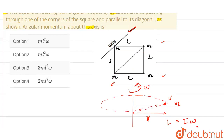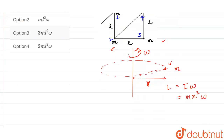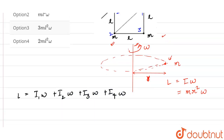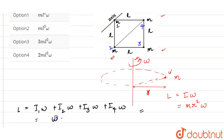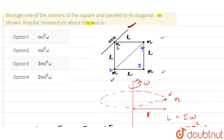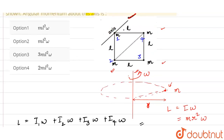Let's label the four masses: mass 1, 2, 3, and 4. The total angular momentum is I1·omega + I2·omega + I3·omega + I4·omega. Taking omega as common: omega times (I1 + I2 + I3 + I4). Now let's individually calculate the moment of inertia of all these masses. For the first one, I1 would be 0.